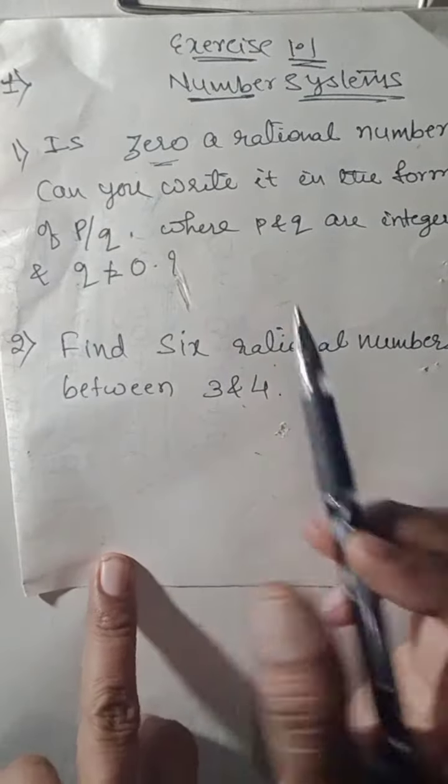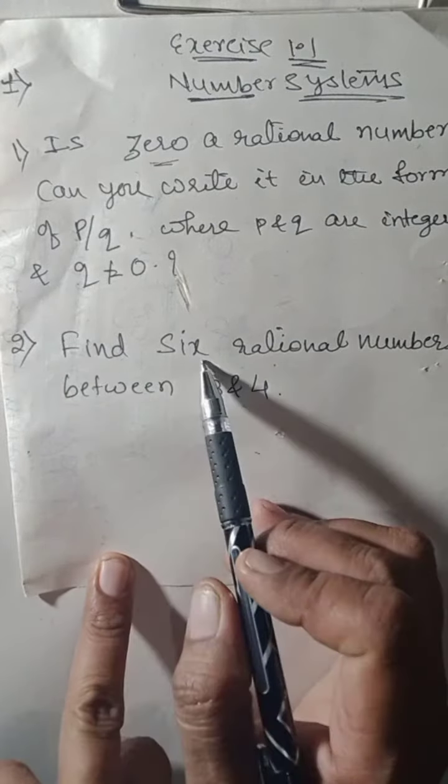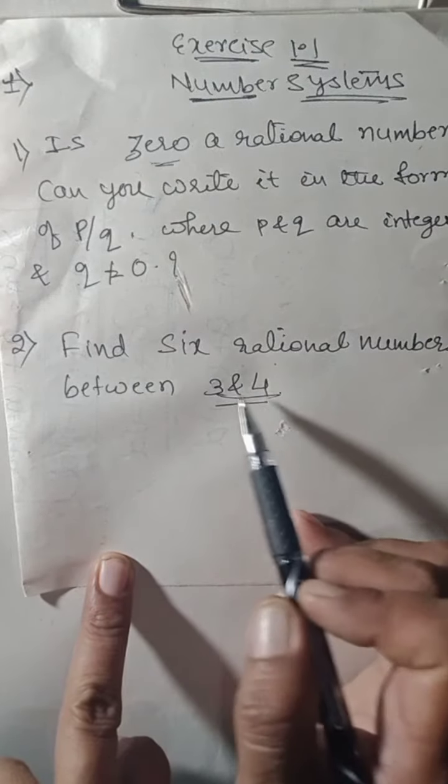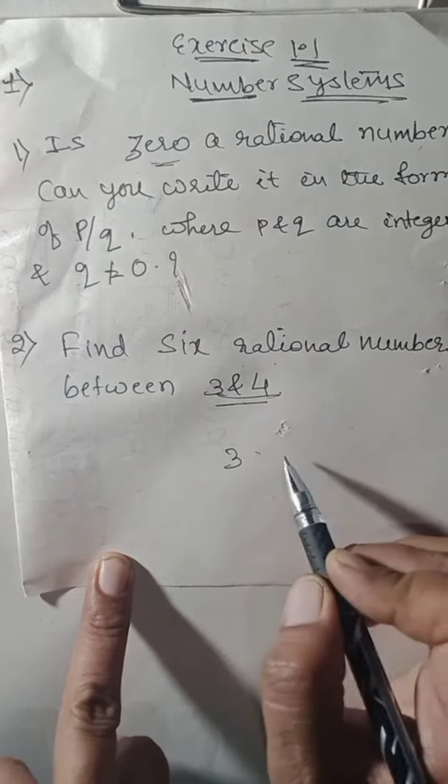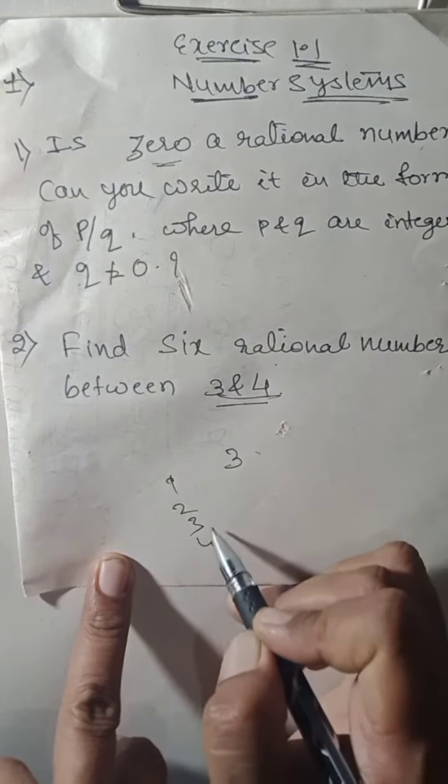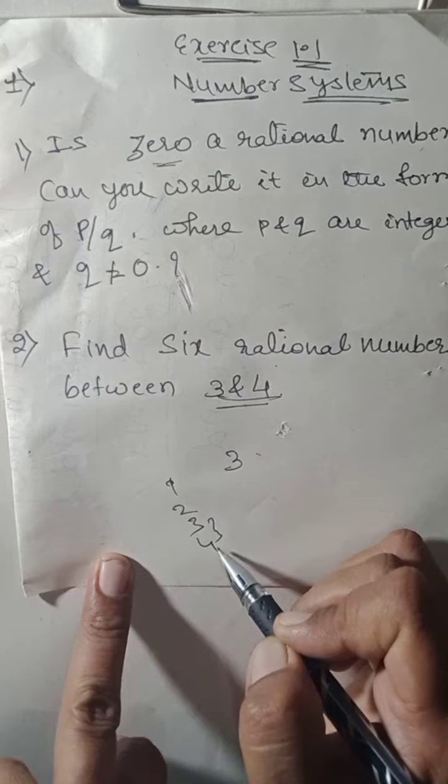See this question, second one of exercise 1.1 children. Find six rational numbers between 3 and 4. Between 3 and 4, when you write the numbers, what do you find? 1, 2, 3, 4. We have natural numbers. These are called natural numbers.